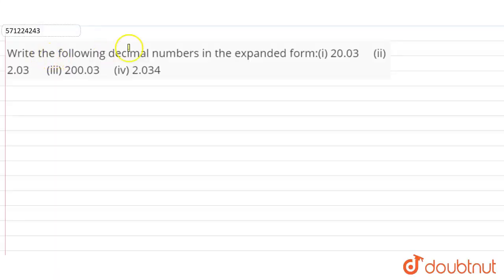Hi students, the question is: write the following decimal numbers in the expanded form. First, 20.03; second, 2.03; third, 200.03; and fourth, 2.034.